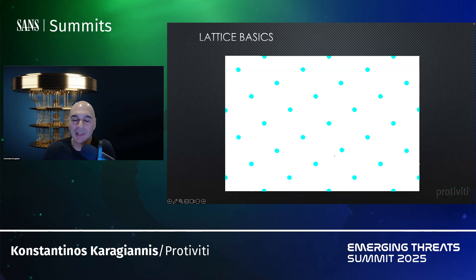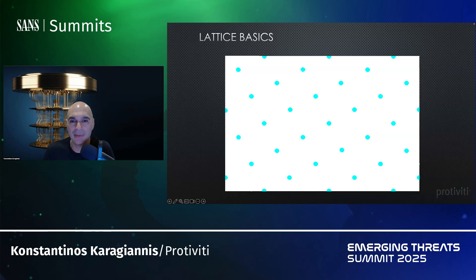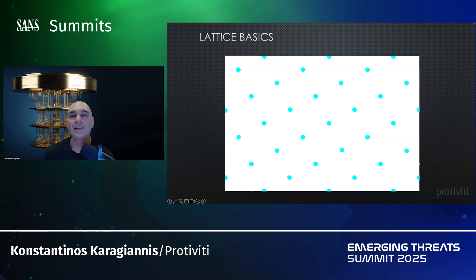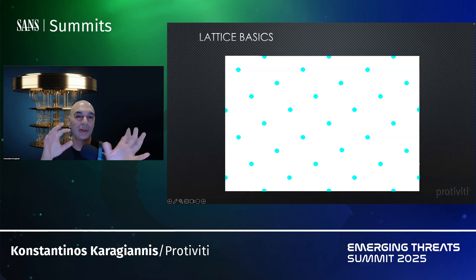When you think of a lattice, it's basically just dots in a field — not random though. They have a repeating pattern created in a very specific way. If I ask you to imagine a two-dimensional lattice, it's easy — just dots like you see. A three-dimensional lattice, you could think of little marbles floating in a glass box, floating in space.